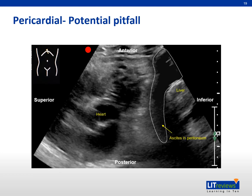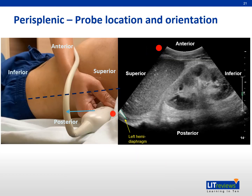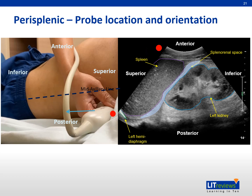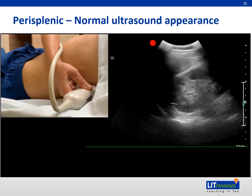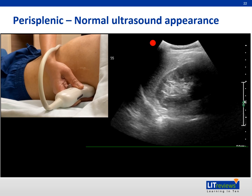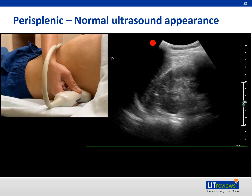Be aware that ascites may mimic pericardial fluid; careful orientation of the probe can overcome this pitfall. Moving on to the perisplenic region: start the scan in a longitudinal view, placing the probe at the level of the patient's nipple along the mid-axillary line. Move the probe inferiorly until you see the spleen and left kidney, and look for free fluid in the splenorenal space. The ribs and lungs images alternate with each other. Depending on the size and location of the spleen, you may need to move the probe more posteriorly to obtain the best view of the splenorenal space.